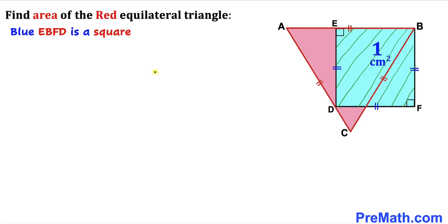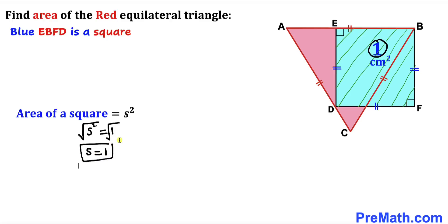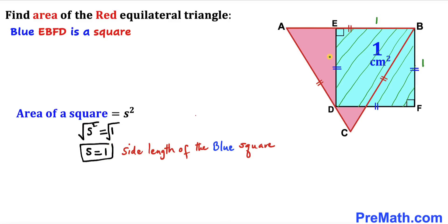Here's our very first step. Let's focus on blue square EBFD. We know it is a square with area 1 cm². Recalling the area formula: Area = S², so S² = 1. Taking the square root of both sides, S = 1. So the side length of this blue square turns out to be 1 cm, meaning all sides are 1 cm.